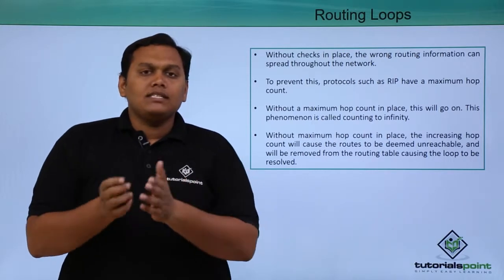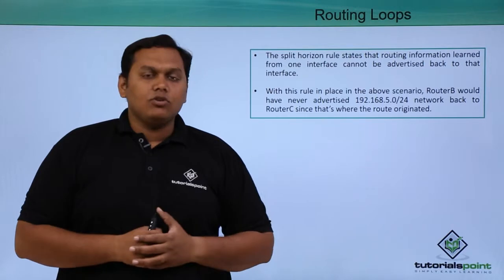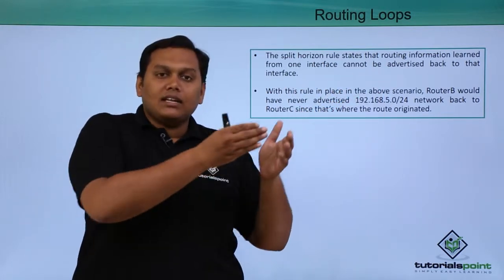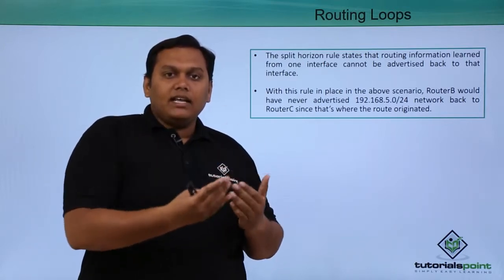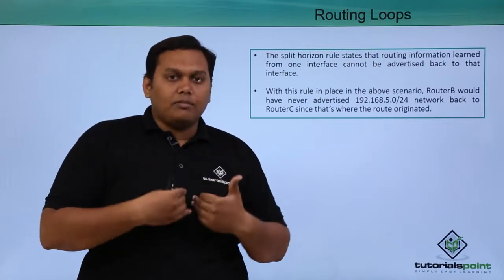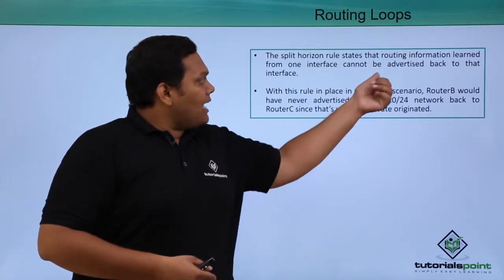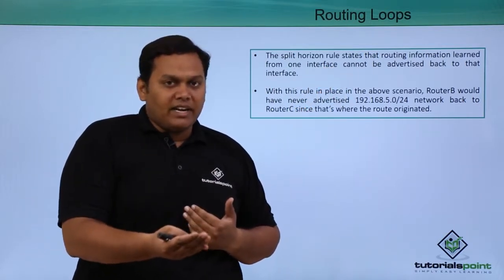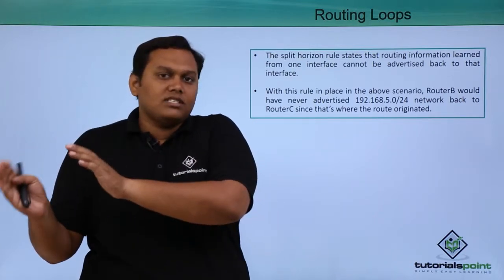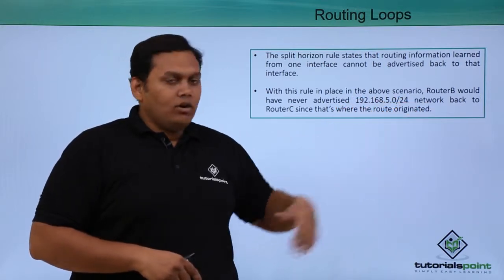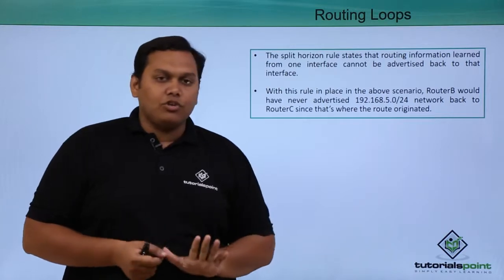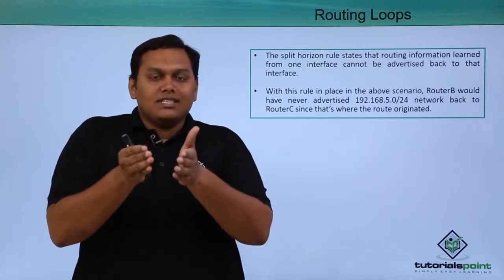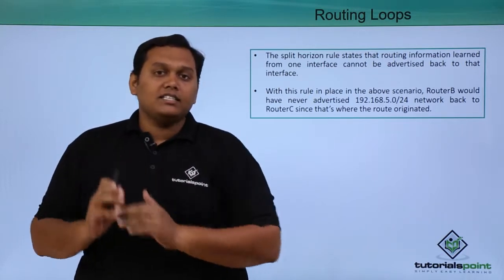The second check is the split horizon rule. This states that routing information learned from one interface cannot be advertised back out that same interface. Router B had advertised a periodic update that the 5.0 network belongs to it. With split horizon in place, router B would not advertise the 5.0 network back, so router C will not send that route back to the originator, preventing the loop.